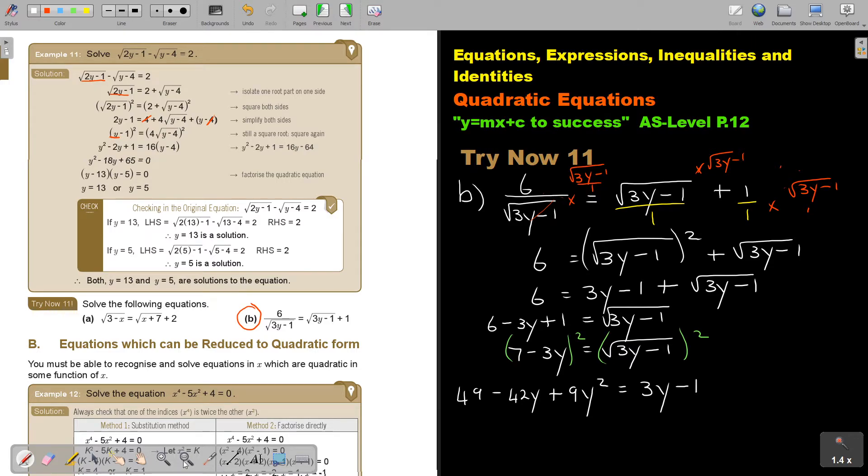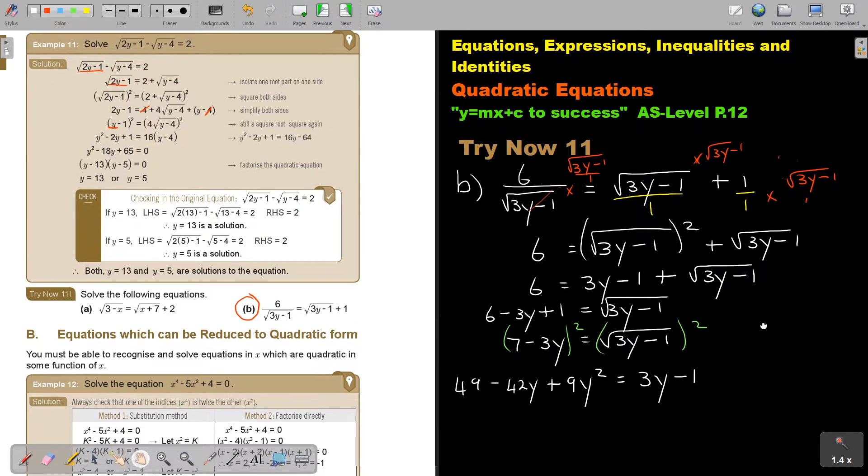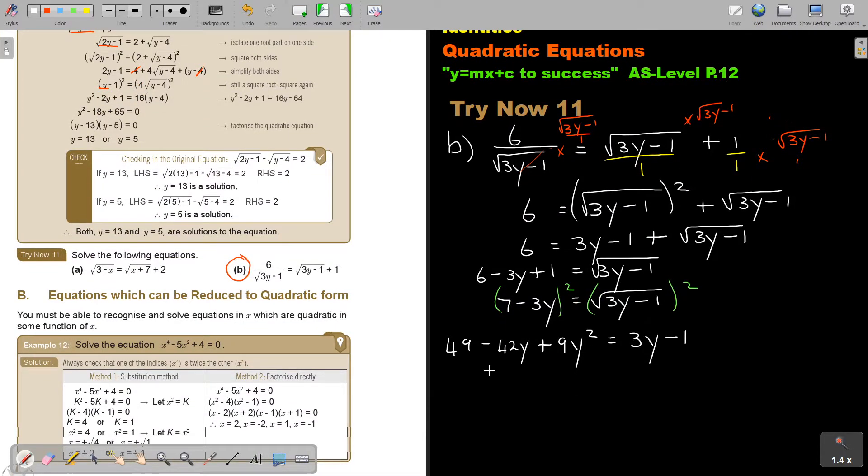As soon as I see the square root gone, I take everything to one side. I'm already trying to order it a little bit. So this one comes over, the 49 was there, the 1 comes over. This is going to be 9Y squared, and this is going to be negative 45Y, and that is going to be 50, and that's going to be equal to 0.